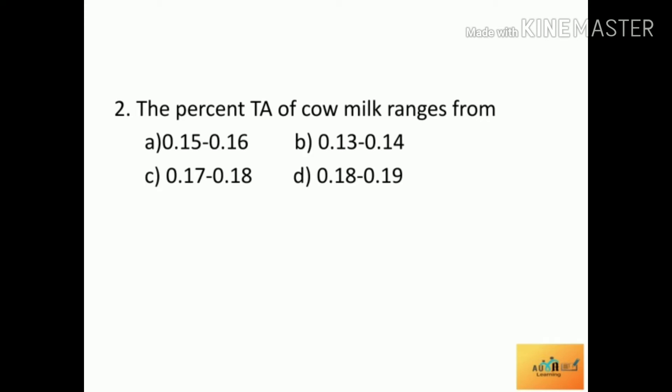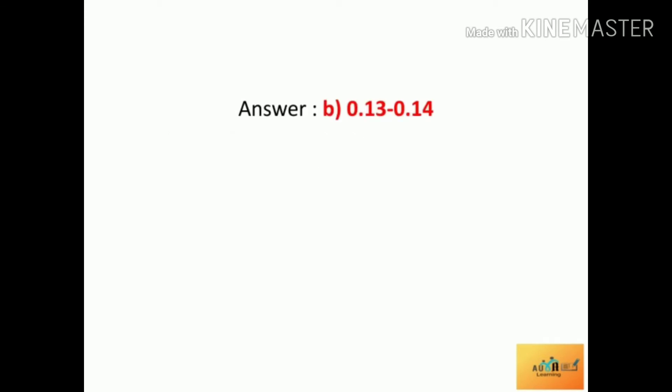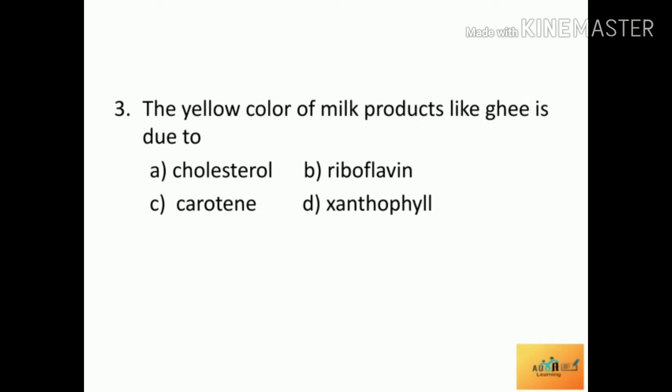Second question: The percent titratable acidity (TA) of cow milk ranges from — Option A: 0.15 to 0.16, Option B: 0.13 to 0.14, Option C: 0.17 to 0.18, Option D: 0.18 to 0.19. The correct answer is 0.13 to 0.14.